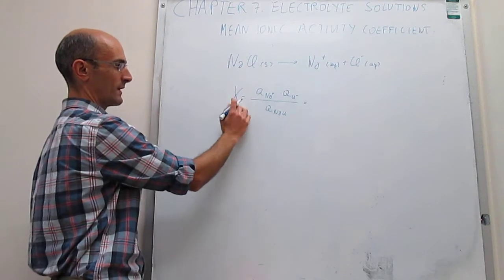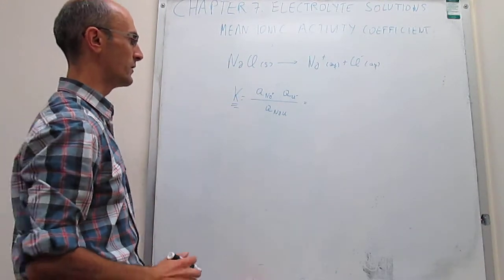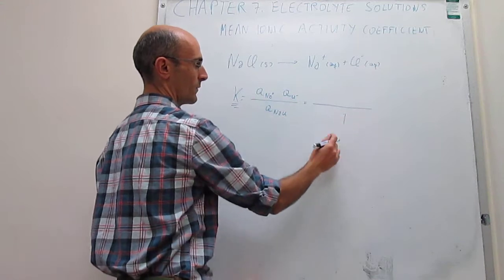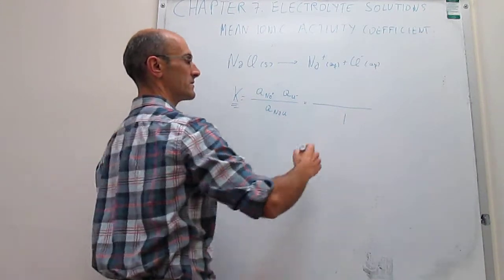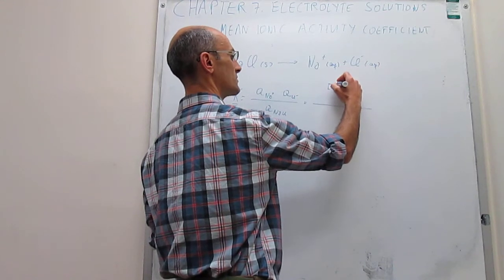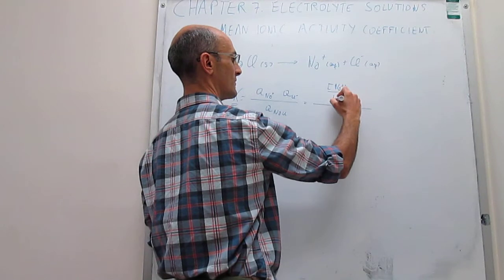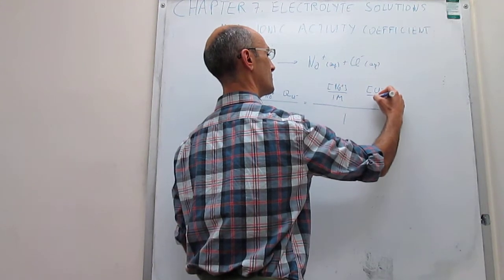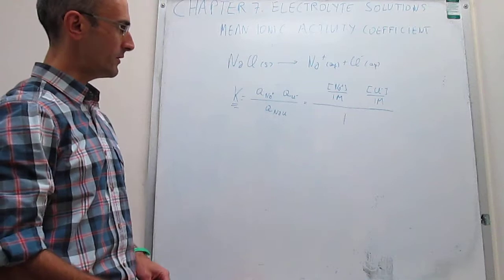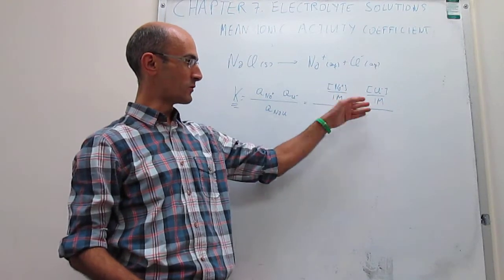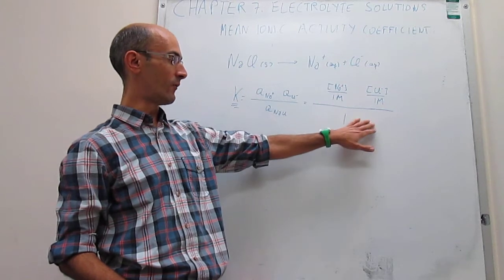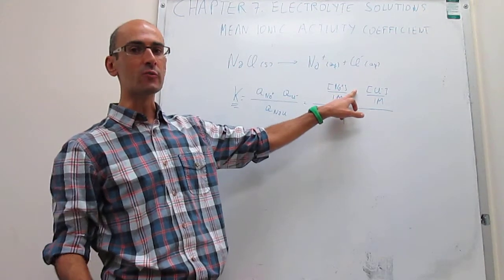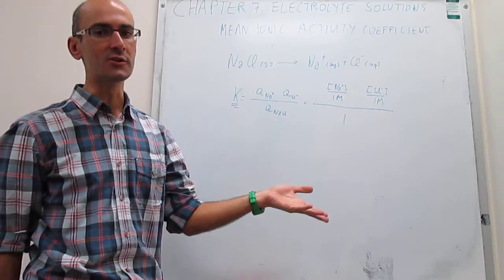These concentrations will always be at equilibrium. The way we normally do this is by noting that the activity of a solid is considered to be one. Then we have the activity of the ions: that would be the molar concentration of the sodium ion divided by the reference concentration of one molar, times the molar concentration of the chloride ion over one molar. People usually don't write the division by one, so what you actually have is simply the product of the concentrations of the ions — that's what you learned in analytical chemistry as the solubility product of the salt.